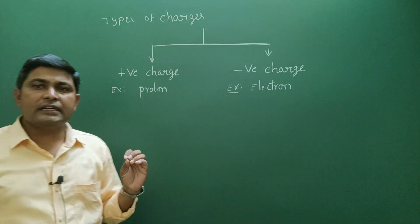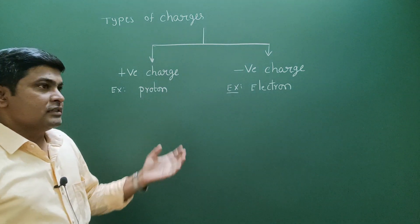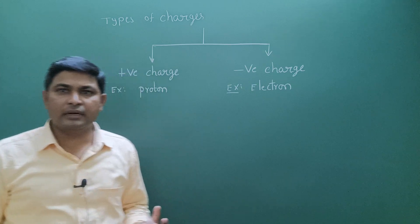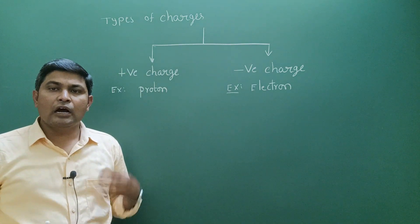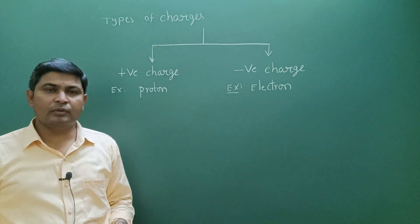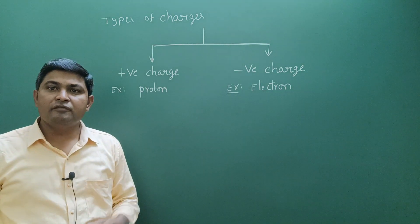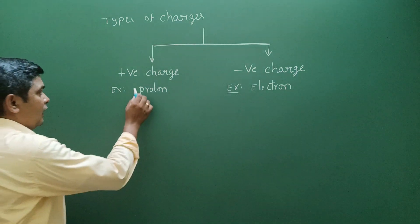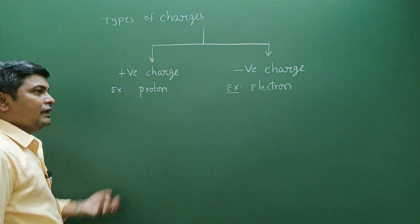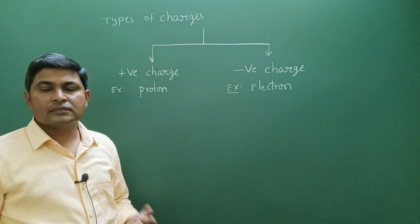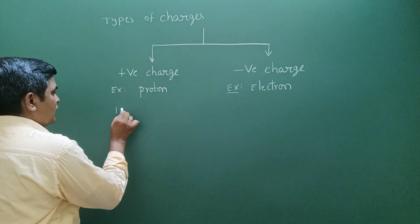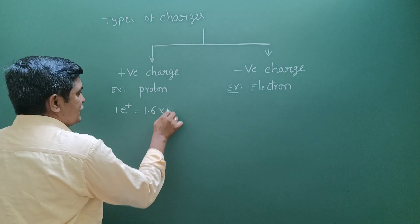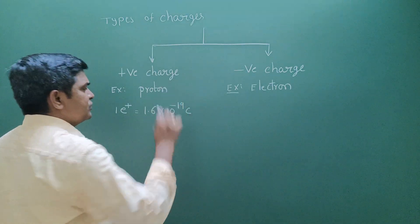Whenever we talk about physical quantities, we take charge. Just like we remember the mass of an object in kilograms, whenever we talk about charges, we need to talk about the charge quantity. One proton has a charge of +1.6 × 10⁻¹⁹ coulombs.